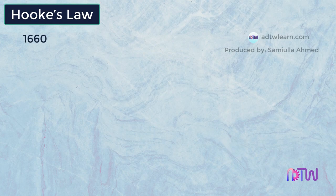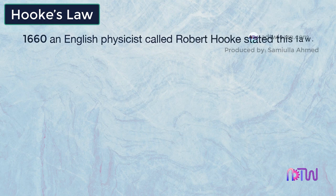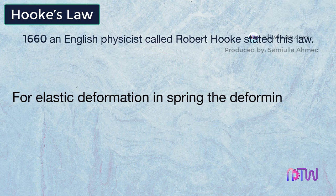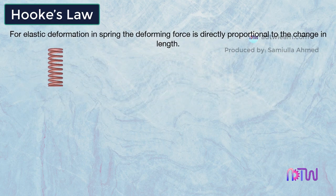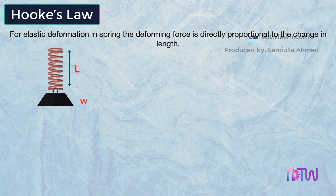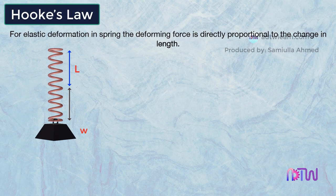In 1660, an English physicist called Robert Hooke stated this law, which states that for elastic deformation in a spring, the deforming force is directly proportional to the change in length. Consider a spring whose one end is fixed and has a length L, and the other end is loaded with load W. The spring undergoes deformation and its length increases. Let's call this increase in length delta L.